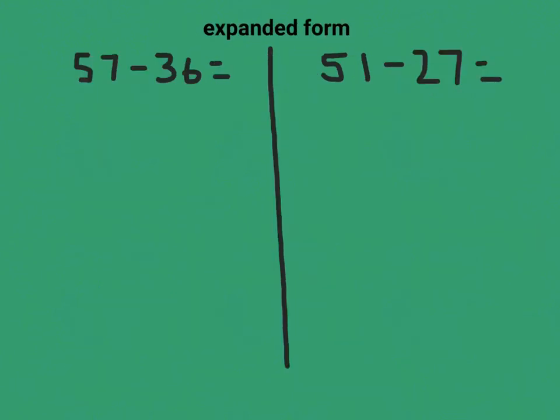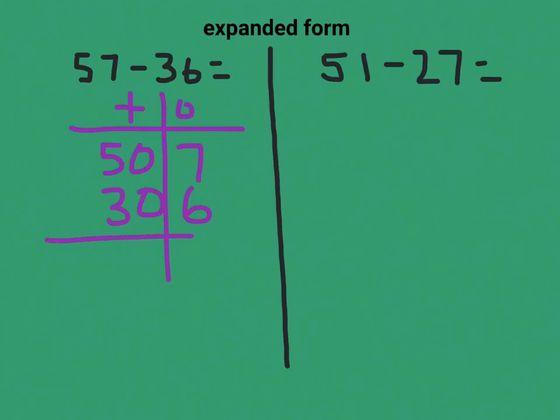The last strategy we can take a look at is using expanded form. So I'm going to show you expanded form with 57 minus 36. I go ahead and make my t-chart with my tens and my ones. I write 50 and 7 and 30 and 6. I draw a line underneath and remind myself I am subtracting. 7 minus 6 is 1. 50 minus 30 is 20. So the answer is 21. That was easy because there was no regrouping.